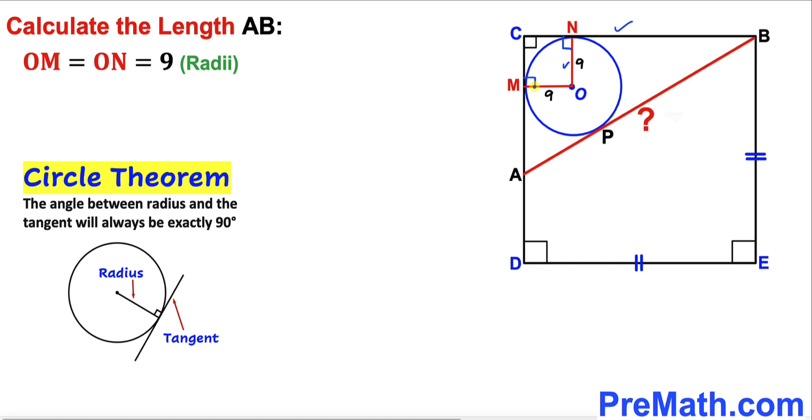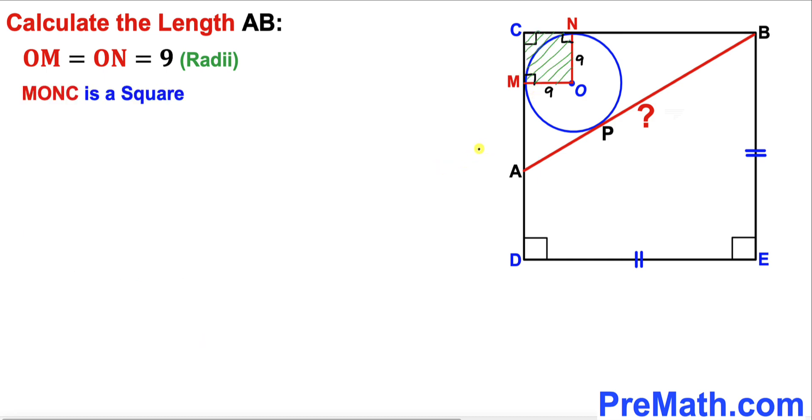Likewise this angle is 90 degrees as well. Therefore we conclude that MONC is a square, and since all sides of a square are equal, MC and NC are 9 units as well.